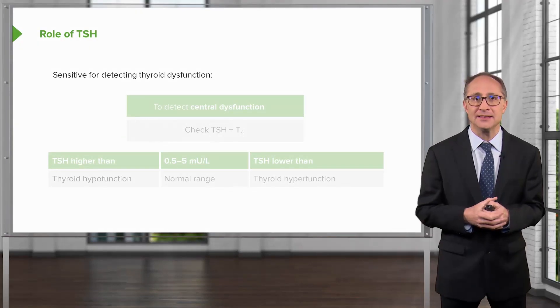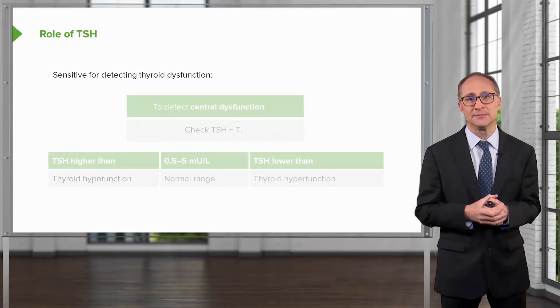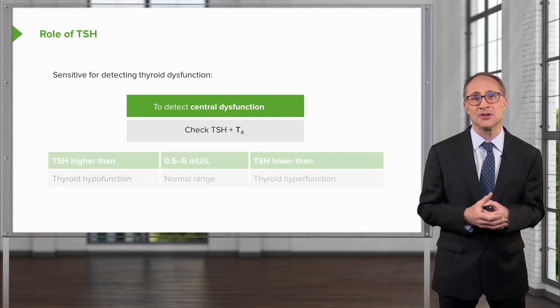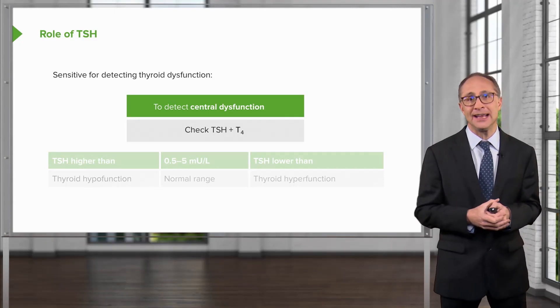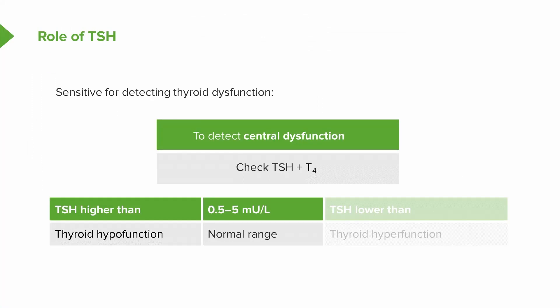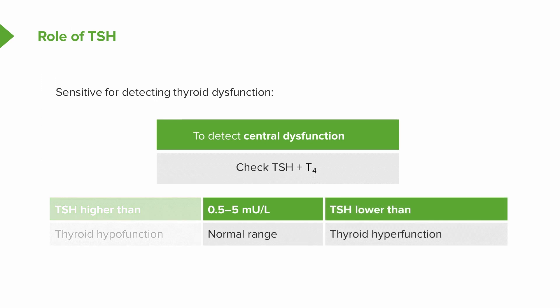TSH is very sensitive for detecting thyroid dysfunction. Check the T4 level with the TSH level to evaluate for central hypothyroidism. The TSH level may reflect hypofunction when TSH is high, hyperfunction when TSH is low, or be within the normal range, which is usually in the 0.5 to 5 milliunit per liter range.